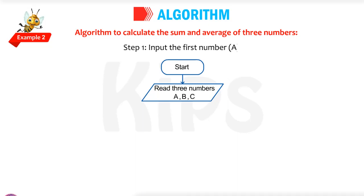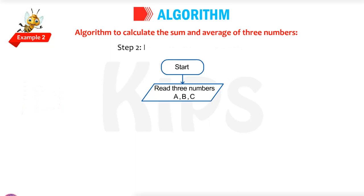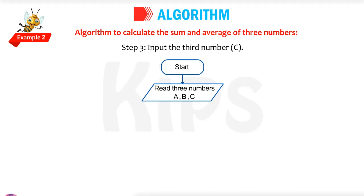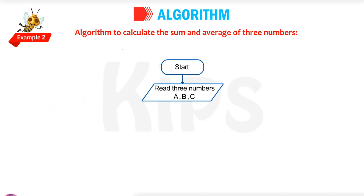Step one: input the first number A. A is a variable — assign the value 10 to variable A. Step two: input the second number B — assign the value 20. Step three: input the third number C — assign the value 30. So three numbers are input: A is 10, B is 20, C is 30.